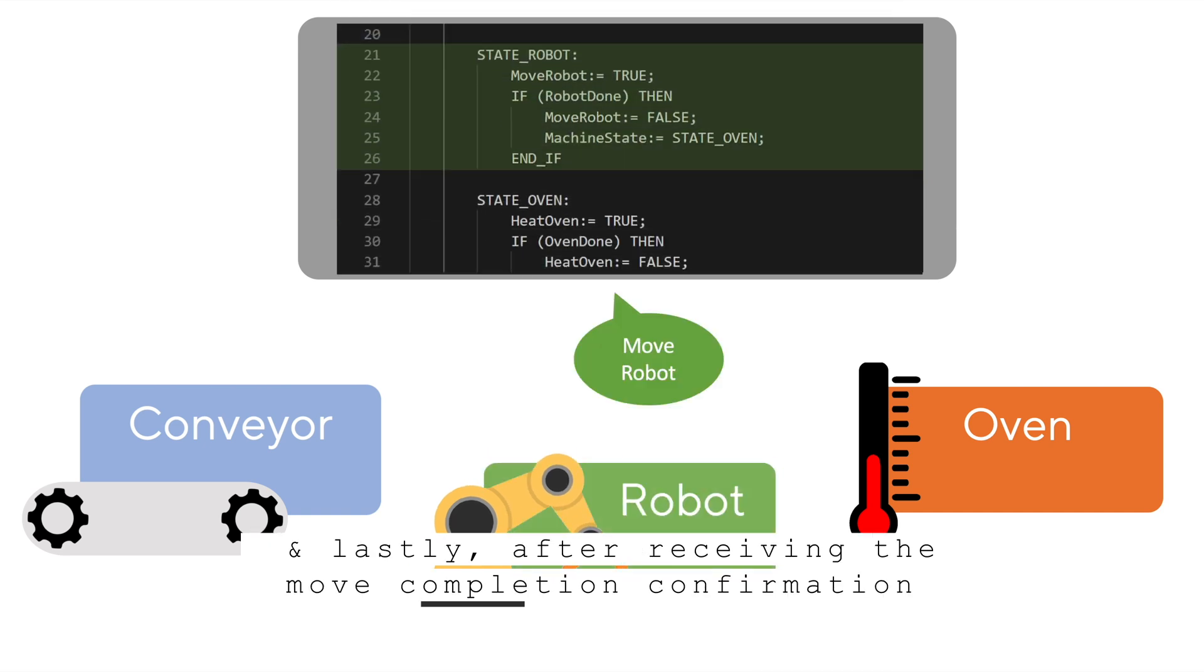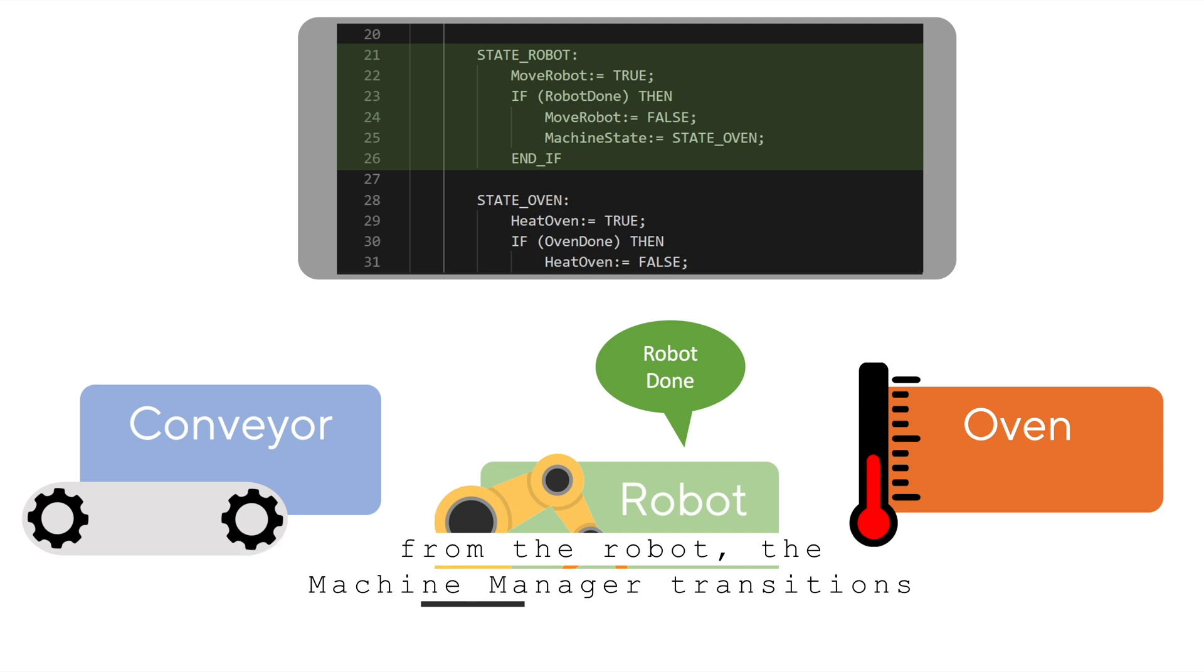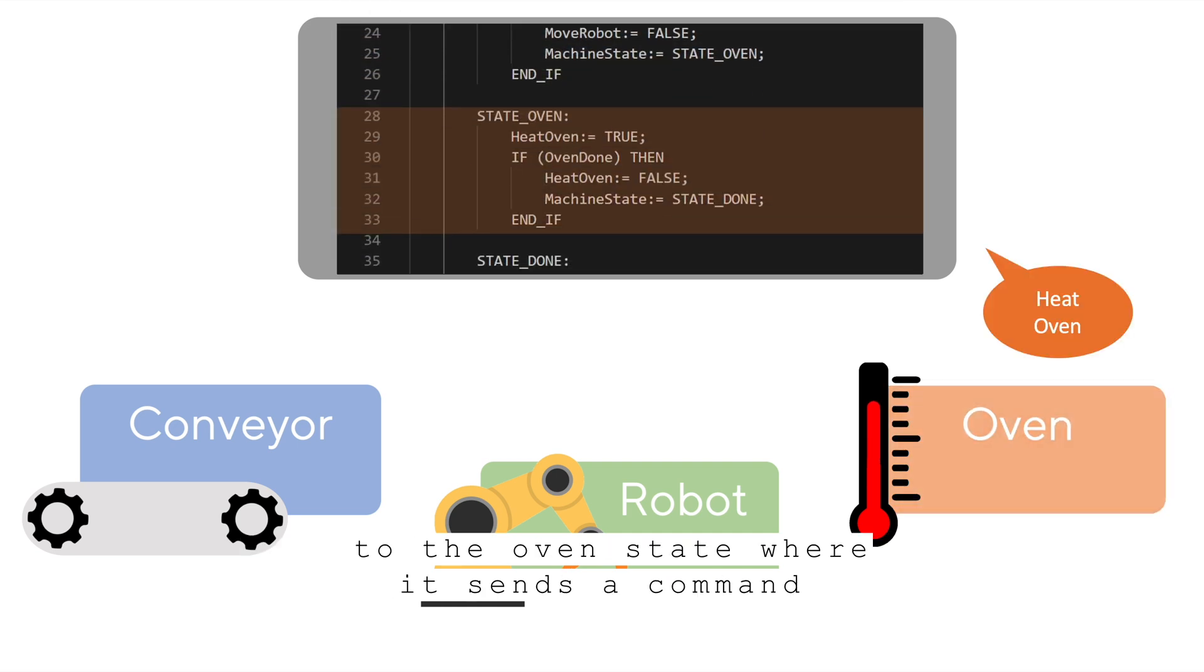And lastly, after receiving move completion confirmation from the robot, the machine manager transitions to the oven state where it sends a command to heat the oven and waits for completion.